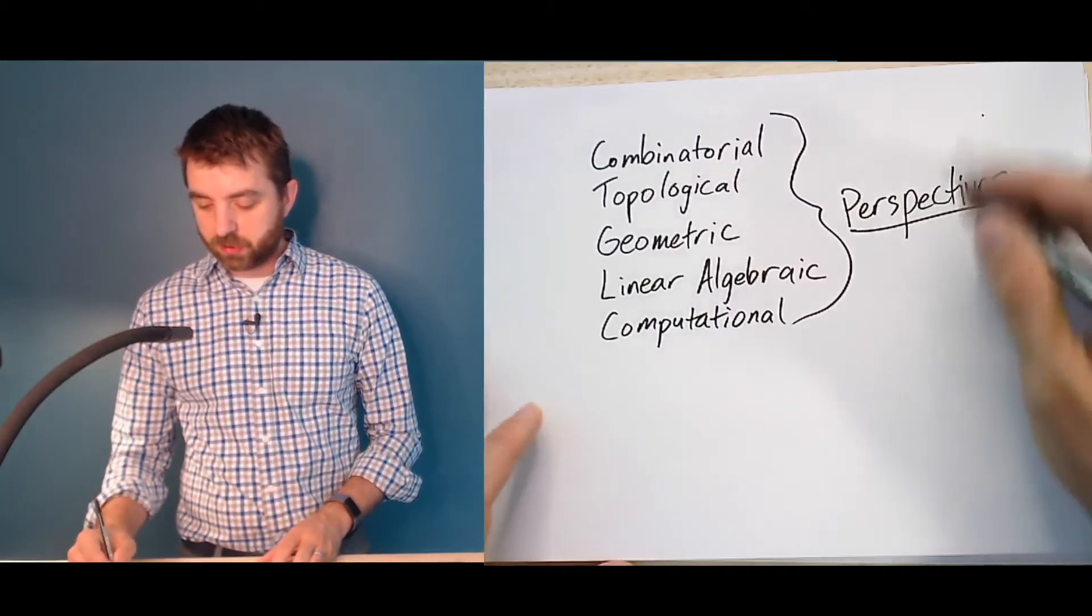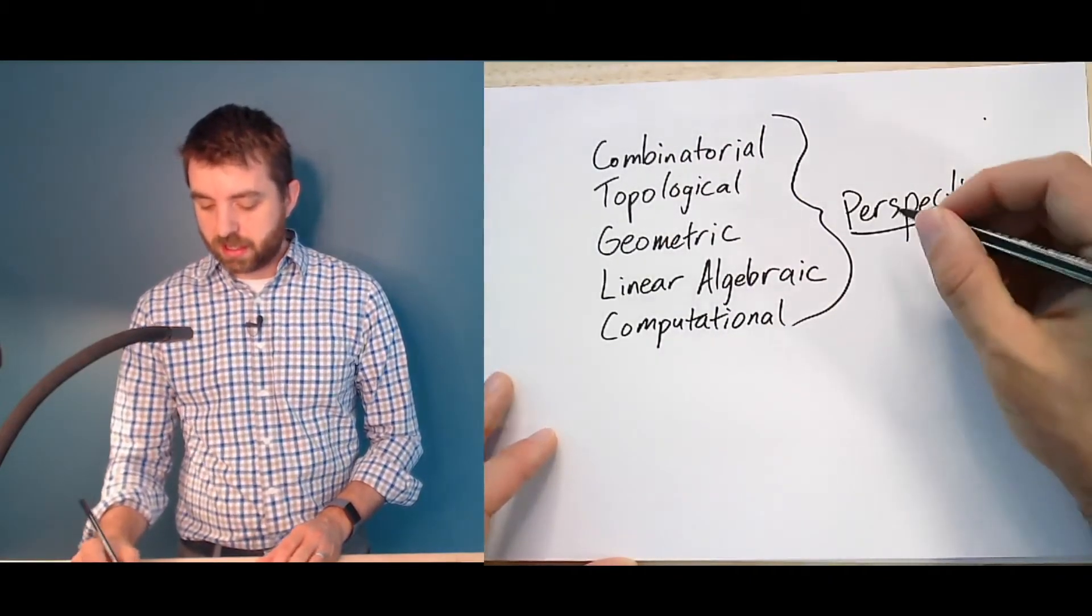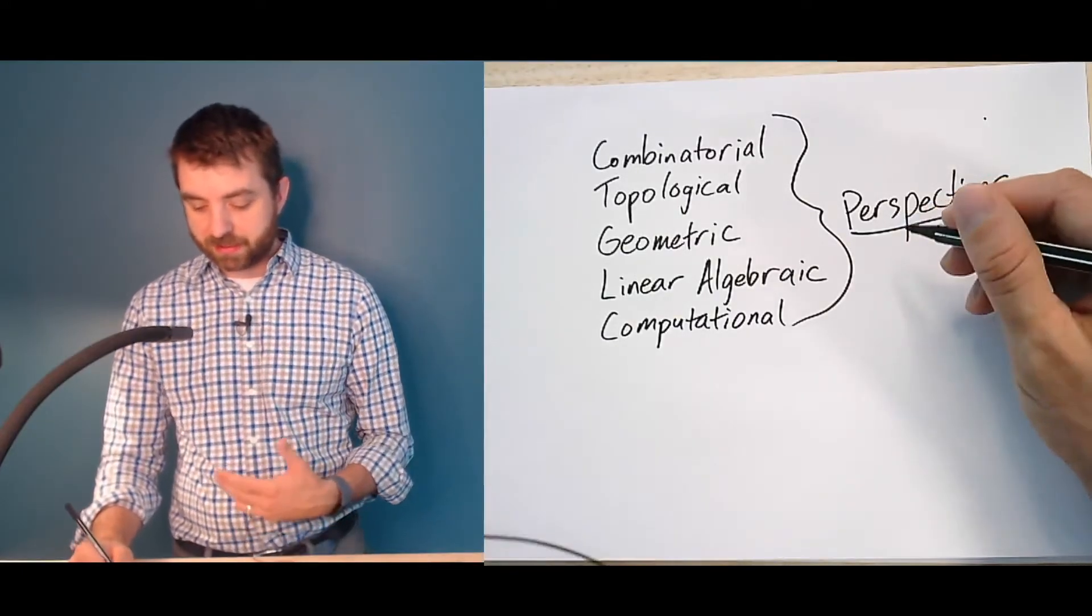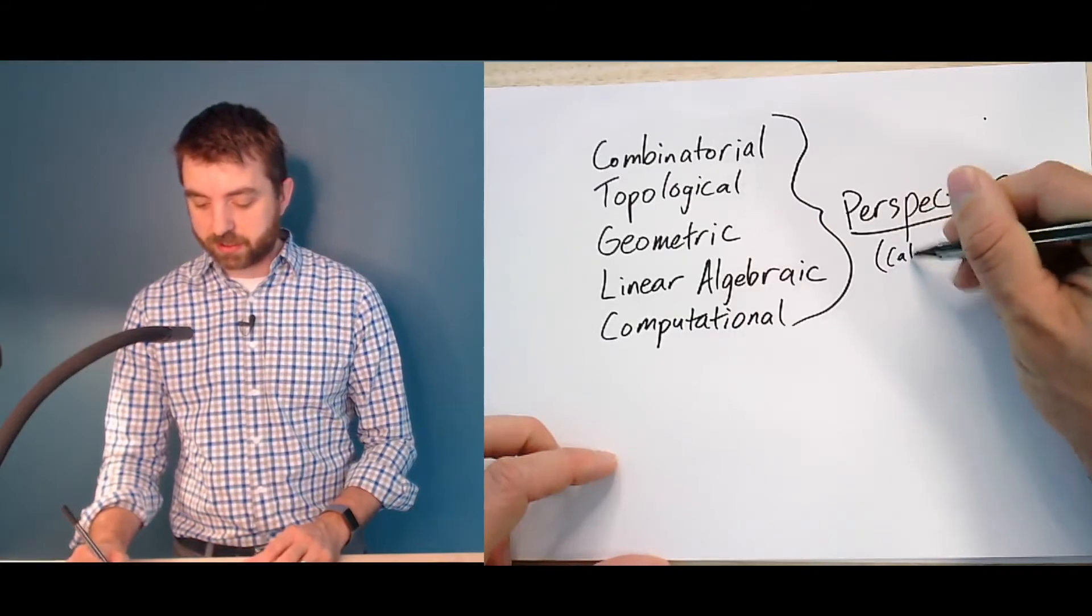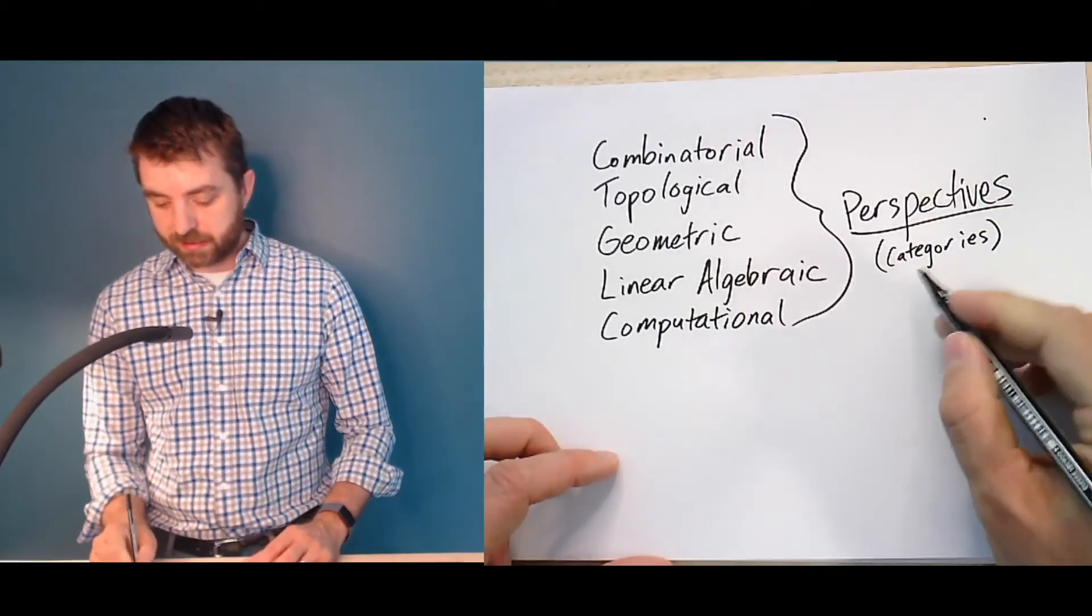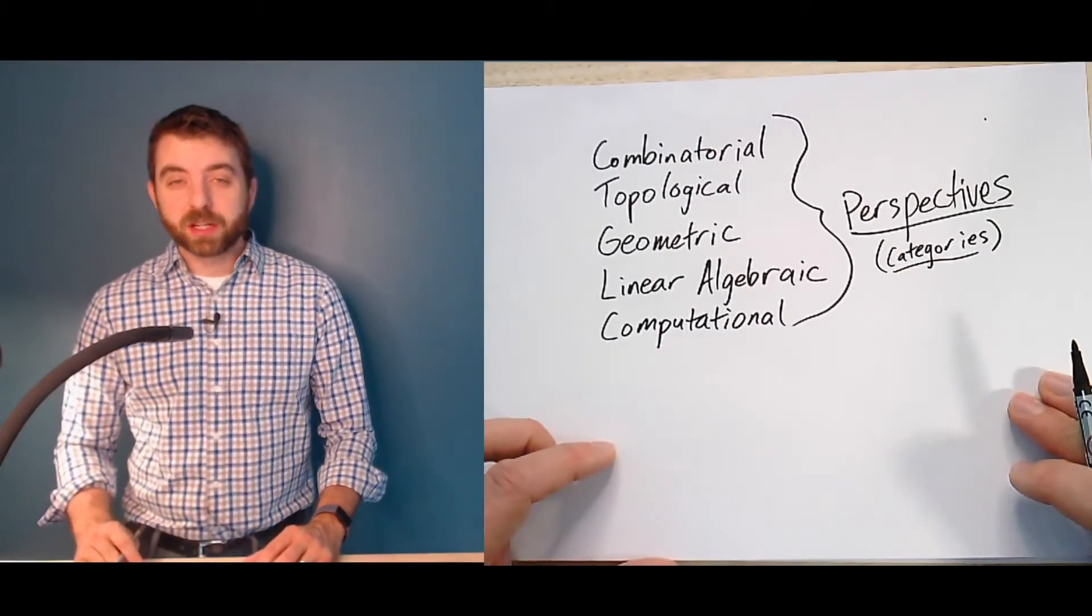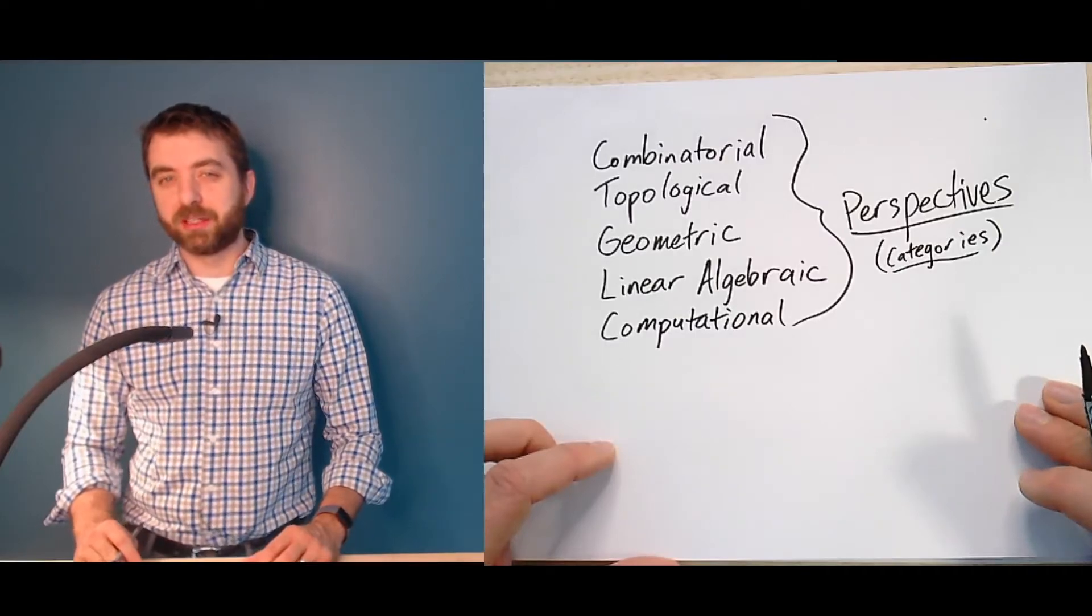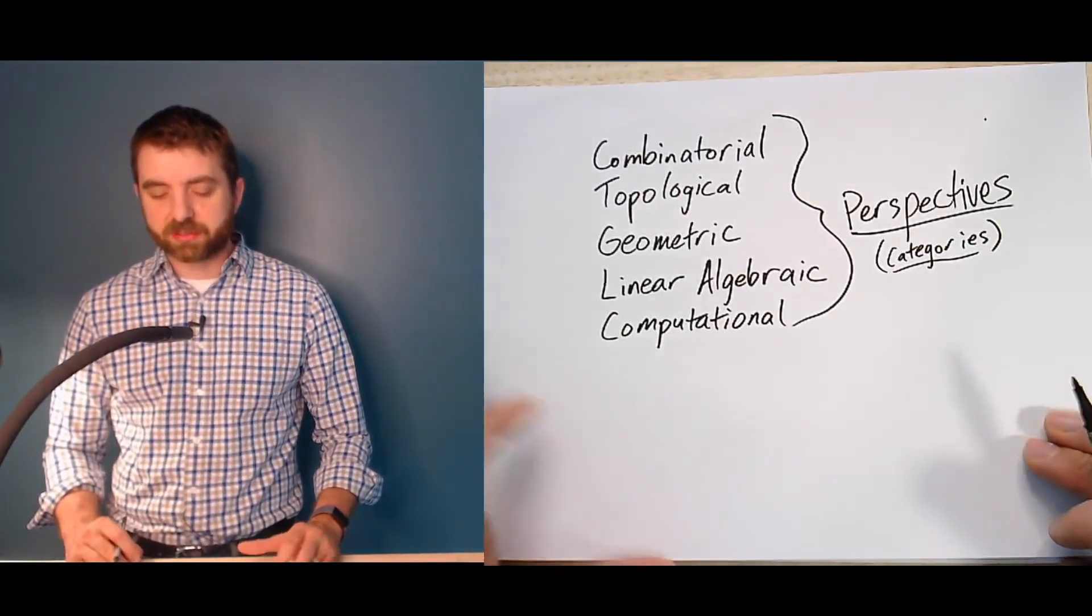And what we'll slowly work through and build up bit by bit is this idea that, in fact, these different perspectives are actually different categories. And when we change perspectives, we're changing categories. And we are not going to learn category theory, but we're going to know at least see what a category is and see when we change between categories, what kinds of facts are still true.